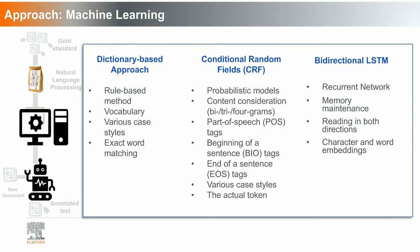Apart from classical approaches like support vector machines, regression models, or decision trees, there are neural network approaches. In dictionary-based approaches you don't use the features used in machine learning like conditional random fields or neural networks. One approach that has become very popular is bidirectional long short-term memory (BiLSTM), which are recurrent neural networks that read in both directions. Here you can use character and word embeddings.